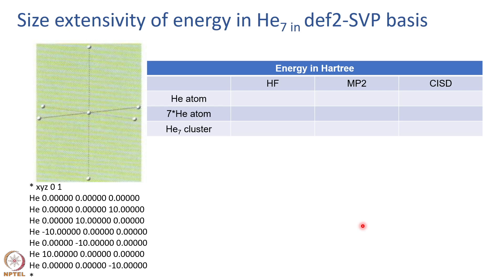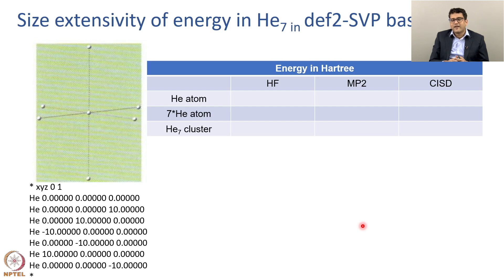To test separability, we will use a helium-7 system: one central helium atom with six helium atoms in an octahedral configuration, separated by a distance of 10 Ångströms. In this case, the energy of 1 helium atom multiplied by 7 should equal the energy of the He7 cluster. We will test whether Hartree-Fock, MP2, and CISD all give the energy of the helium-7 cluster when the single-atom energy is multiplied by 7. This will be one of the homework problems for this week.